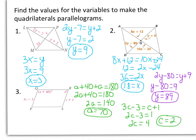So if A equals 70 and C equals 2, then our quadrilateral is a parallelogram.